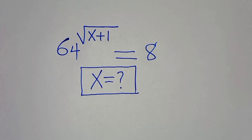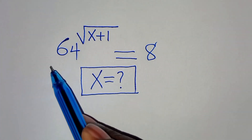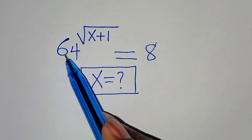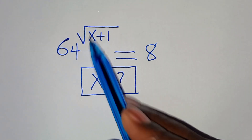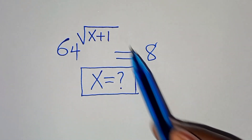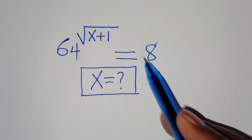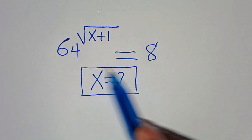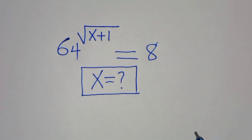Hello everyone, you are welcome to solve this nice exponential equation, which is 64 to the power of square root of x plus 1, and this is equal to 8. So what is the value of x?